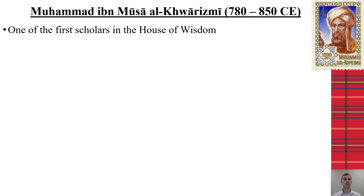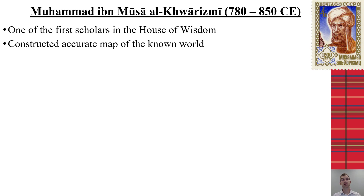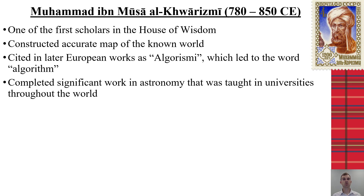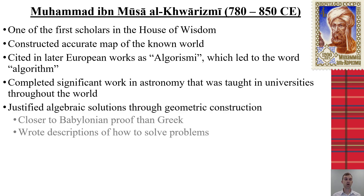One of the most important Arabian mathematicians was Muhammad ibn Musa al-Khwarizmi, one of the first scholars of the House of Wisdom, considered the father of algebra. He also constructed accurate maps of the known world, surpassing even those of the Greeks. He is the reason we have the word 'algorithm,' as his name was later cited as 'Algorithmi,' which was roughly translated into that term. His works on astronomy were also used for hundreds of years afterward.